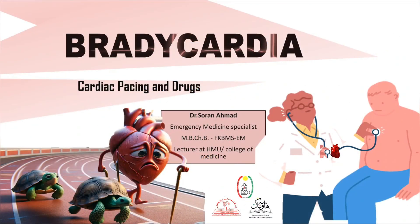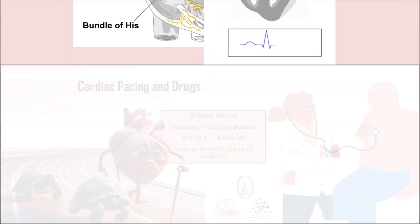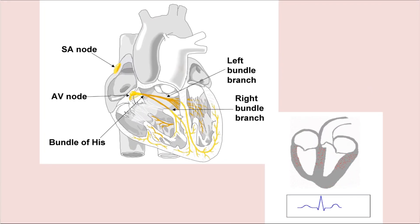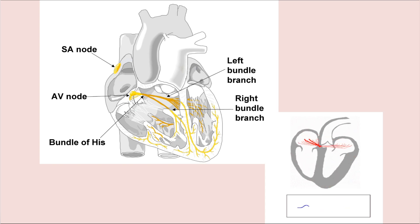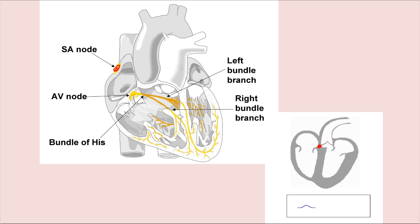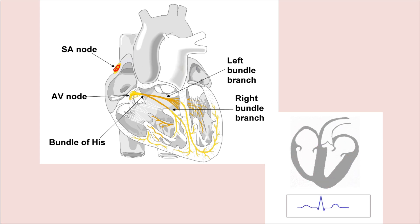Welcome everyone. Let's talk about bradycardia. Bradycardia is any heart rate less than 60 beats per minute. The normal electrical activity of the heart starts from the SA node, which goes through the atria causing atrial contraction.